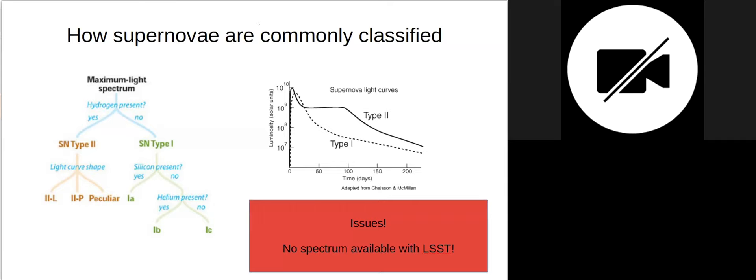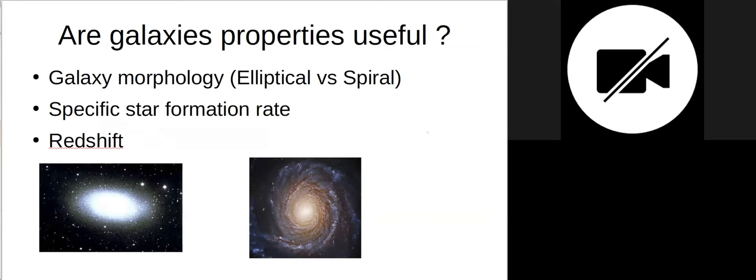This unfortunately is going to be a problem, especially in the future, when we will have surveys like LSST that will produce like millions of alerts per night. So we will not be able to classify each single supernova spectroscopically. And so the questions here are, is galaxy property useful for a supernova classification or for transient classification in general? Well, the answer is turned out to be yes. We know, for example, that core collapse supernovae may appear most likely in spiral galaxies, while type 1a may appear in both elliptical and spiral ones. Furthermore, there are other interesting properties like the star formation rate or like the redshift. With the redshift, we can constrain the luminosity.